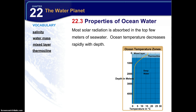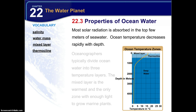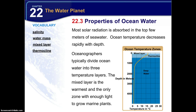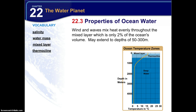Most solar radiation is absorbed in the top few meters of seawater, and ocean temperature decreases rapidly with depth. Oceanographers typically divide ocean water into three temperature layers. The mixed layer is the warmest — it's at the top and the only zone with enough light to grow marine plants. Wind and waves mix heat evenly through the mixed layer, but it's only 2% of the ocean's volume, extending to depths between 50 and 300 meters depending on location.